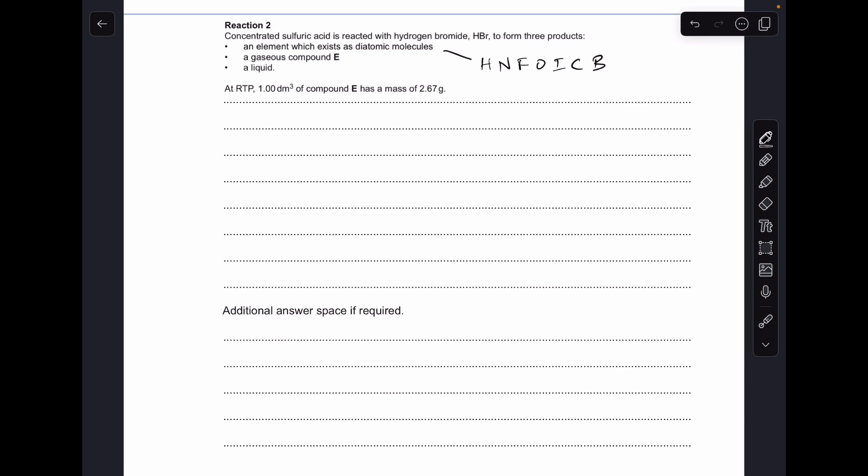Then if you think about the atoms involved in the equation, we can get rid of nitrogen, we can get rid of fluorine and get rid of iodine and get rid of chlorine. So we'll just park that for the moment and move on to the second bullet point, gaseous compound E, and then we've got this extra information.